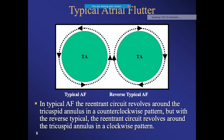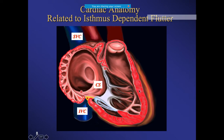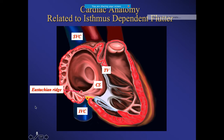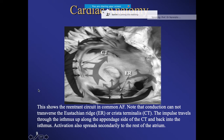To understand the re-entry circuit, we need to understand cardiac anatomy. Important structures include the superior vena cava, inferior vena cava, coronary sinus - which lies in the left atrioventricular groove - the tricuspid valve, the eustachian ridge, and the crista terminalis. There is a zone of slow conduction called the cavo-tricuspid isthmus (CTI).